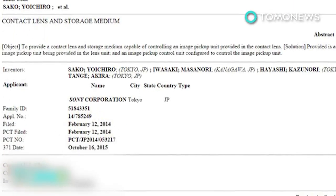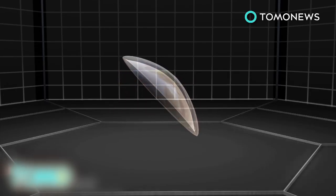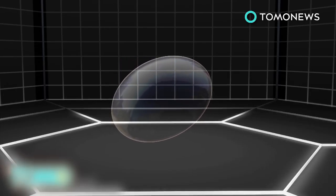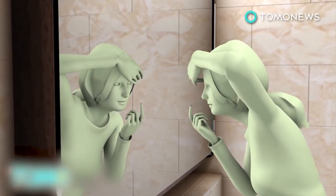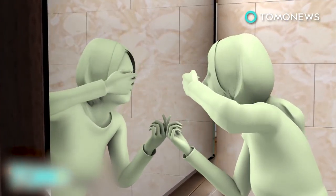Sony filed a patent in the U.S. in May of 2013 for a smart contact lens, a fact only picked up by the media this week. The device would not only take photos and video, but also store data, with no need for a tether to a smartphone.